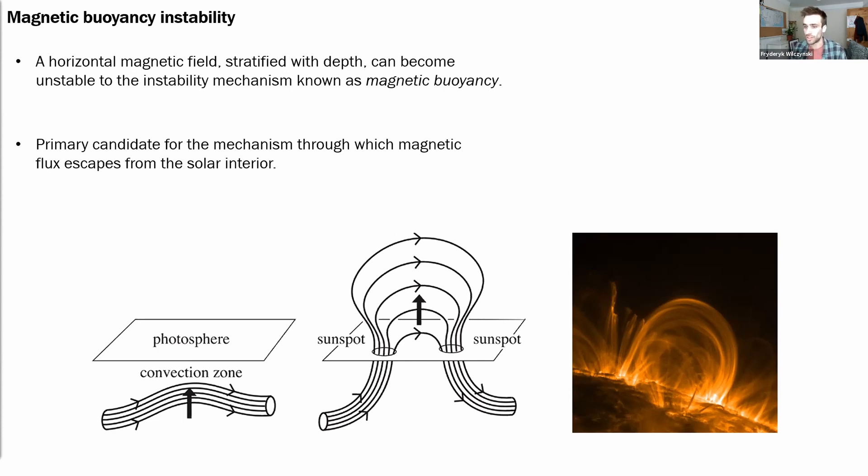This creates an excess potential energy which can be released through an instability mechanism known as magnetic buoyancy, and this mechanism is a primary candidate for the mechanism through which magnetic field escapes the solar interior.